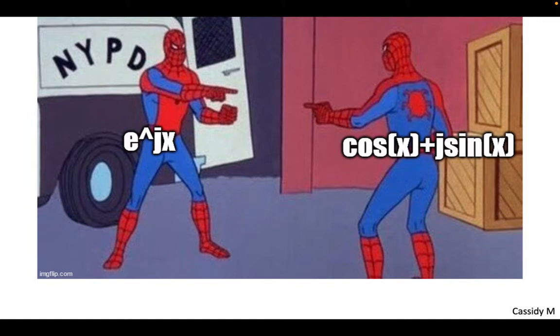So e^(jx) is going to be cos(x) + j sin(x). Euler's identity, just as important in continuous time linear systems as it was in discrete. We can't forget that, we're still going to be using it over and over and over again.